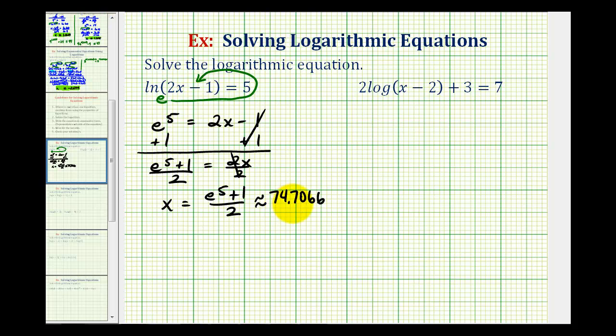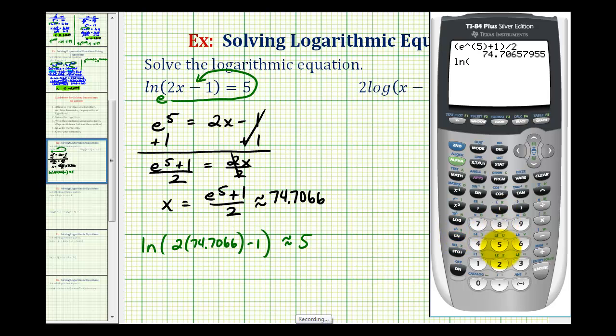To check this, we'd perform substitution back into the original equation. So if this is correct, then the natural log of the quantity two times 74.7066 minus one would be approximately equal to five, since this is rounded. We did round up, and that's why it's a little bit larger than five, but this does verify our solution.